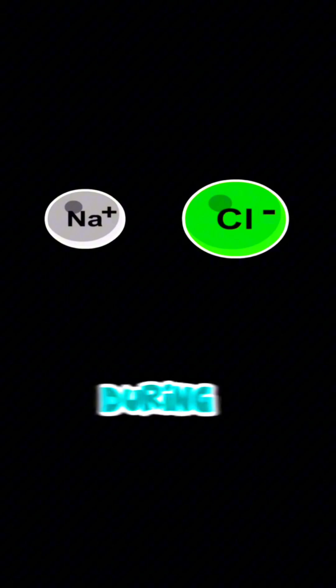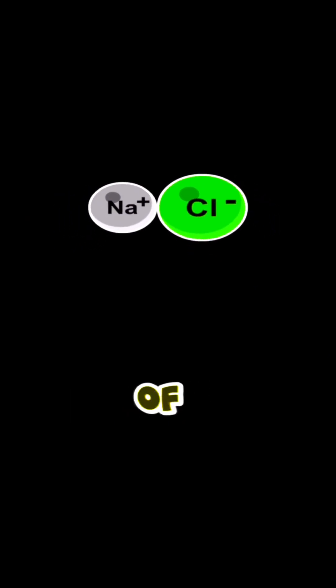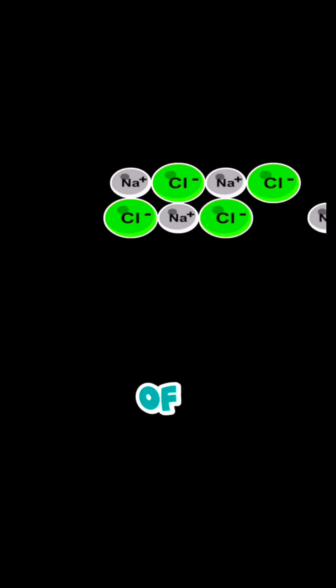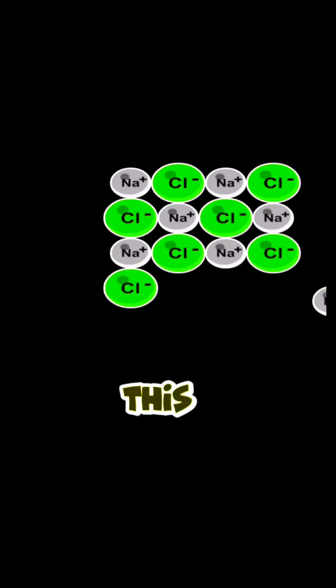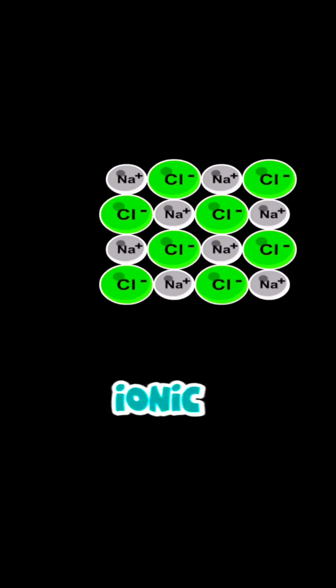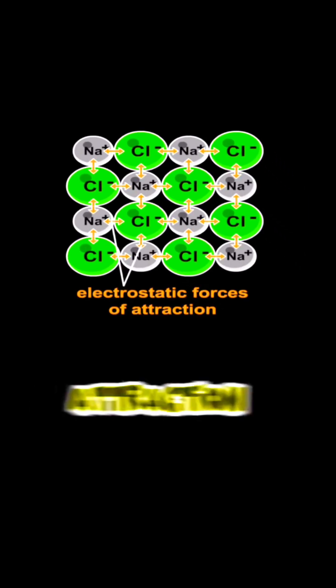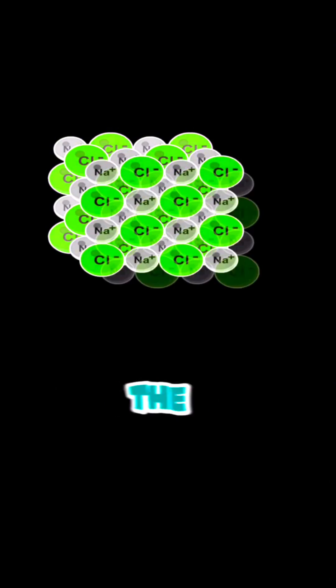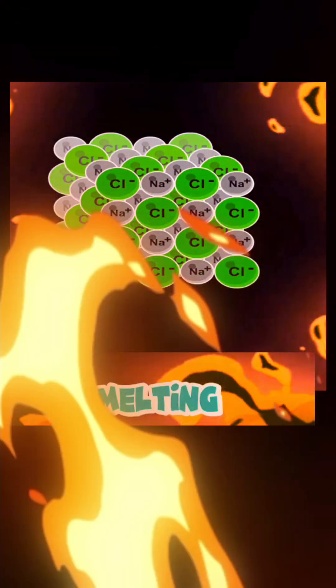During the formation of an ionic bond, a large set of ions get involved to form a cluster of ions that alternate in charge. This is known as an ionic lattice. A strong electrostatic force of attraction exists between those ions, and that causes the ionic lattice to have very high melting points.